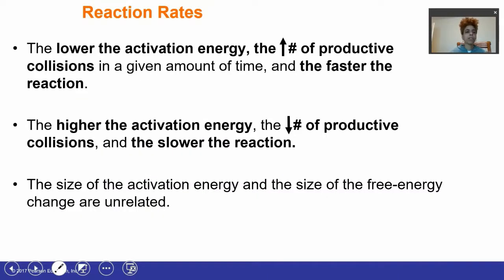So the lower the activation energy, the higher the number of productive collisions and the faster the reaction. If I don't have to put in too much energy into a reaction, then I'm going to have more productive collisions. The higher the activation energy, the lower the number of productive collisions and the slower reaction. Although a reaction is slow, it doesn't mean that it's not going to occur or that it's not spontaneous. It just means that it's slow.